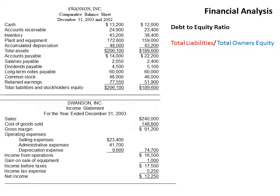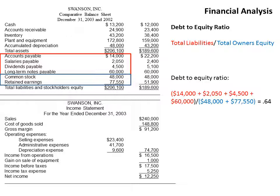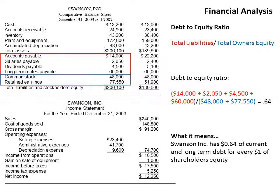Next is the debt-to-equity ratio — total liabilities divided by total owner's equity. Since it says total liabilities (not average), we use the current year's left column: accounts payable, salaries payable, dividends payable, and long-term notes payable, divided by owner's equity (common stock plus retained earnings). We get 0.64, meaning Swanson Inc. has $0.64 of current and long-term debt for every $1 of shareholders' equity. This shows how heavily the company is financed by debt versus owners' funds — in this case, they rely slightly more on liabilities than their own equity.